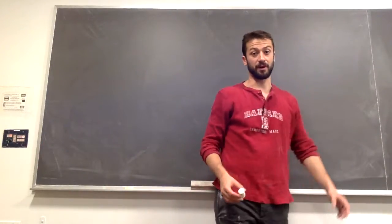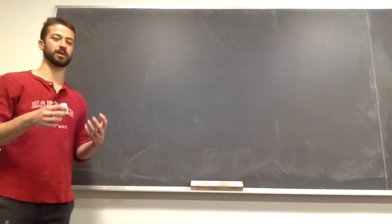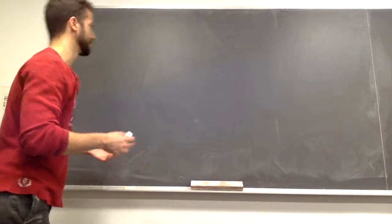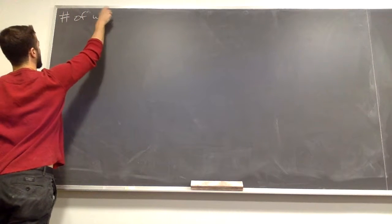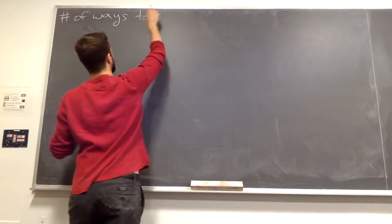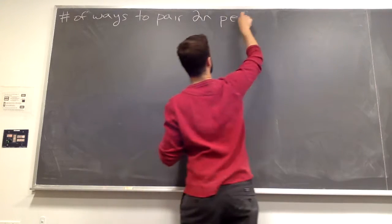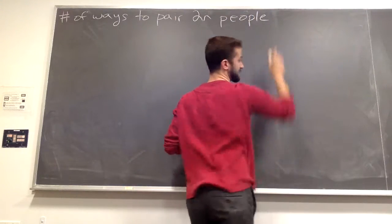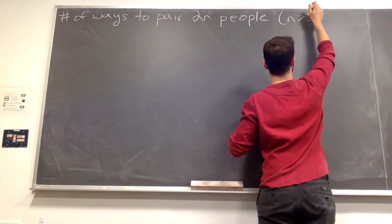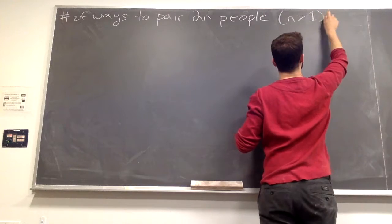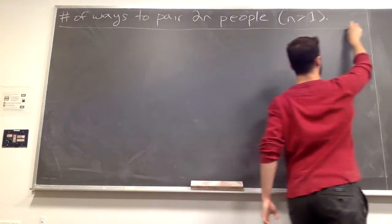Okay, so we're going to do a counting problem. We're going to think of a pretty quick, pretty succinct prompt for this problem. We're going to try to count the number of ways to pair 2n people. We're going to say, so this isn't a trivial problem, we're going to say n is a positive integer and ensure that it's greater than 1.